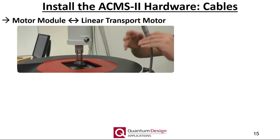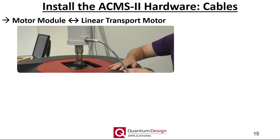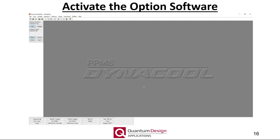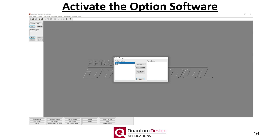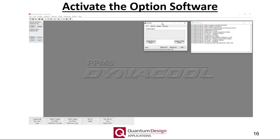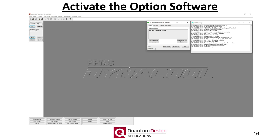After the motor is in place, ensure it is connected to the motor module. Then connect the ACMS2 module to the gray LEMO connection. Note, the ACMS2 module also includes two BNC connections, which can be used to optionally monitor the pickup coil and AC drive signals using an external oscilloscope. Activation of the ACMS2 software follows as it does with any software option — by clicking Utilities in the menu bar, followed by Activate Option and selecting the ACMS2 option. During the activation process, the coil set configuration file is loaded, the motor is homed, and coil set thermometry is established. For the Dynacool system, the temperature indicator will turn blue when controlling off of the ACMS2 coil set.